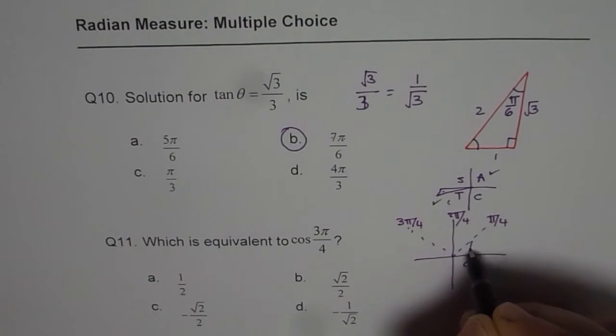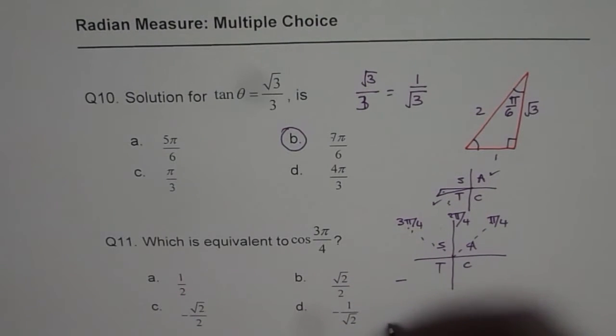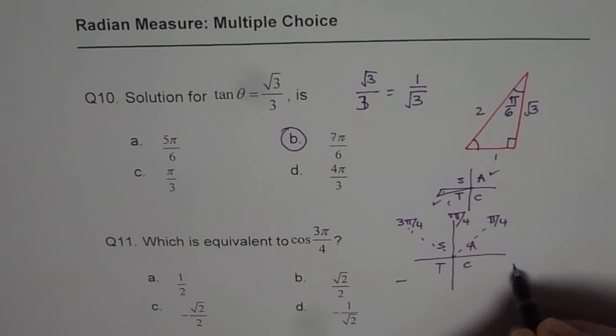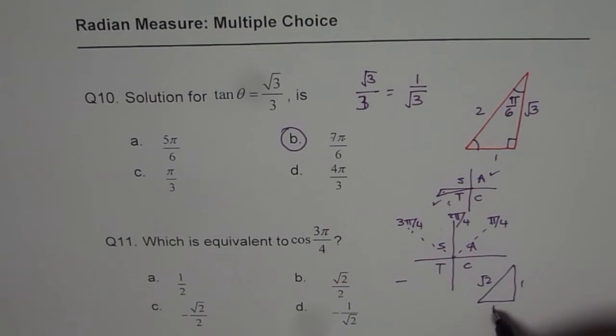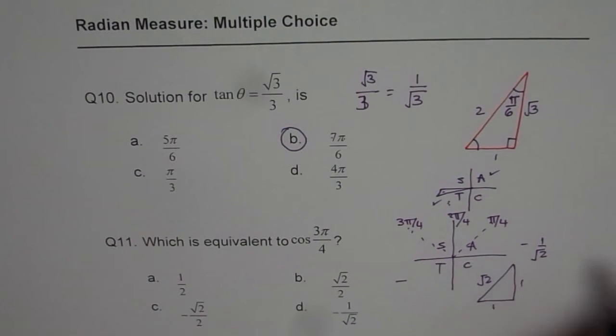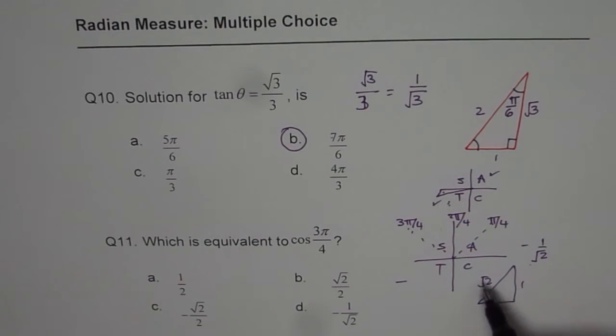Again with the CAST rule, we know cosine function is negative. So we are looking for a negative value and the acute angle is π by 4. The triangle for us is 1 over square root 2, with a negative sign.